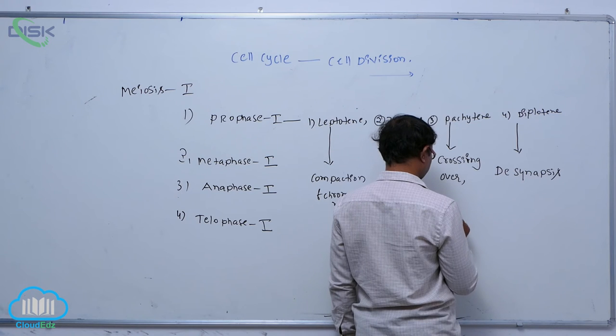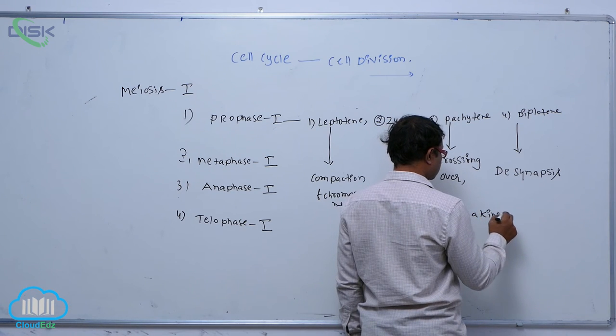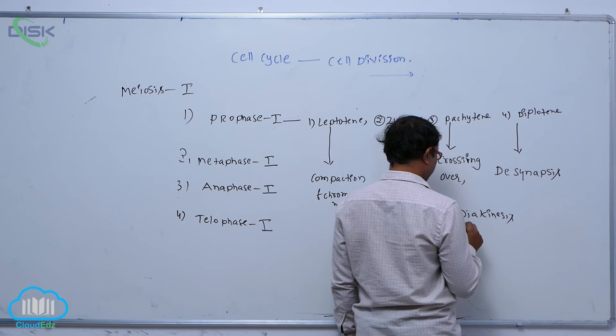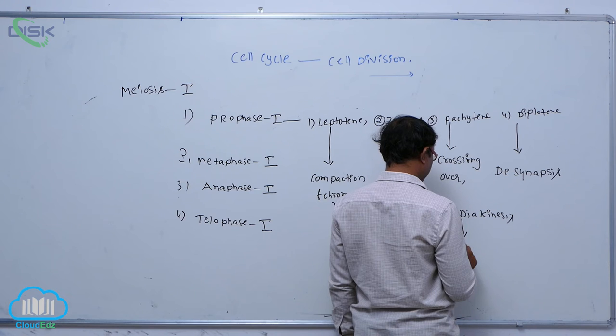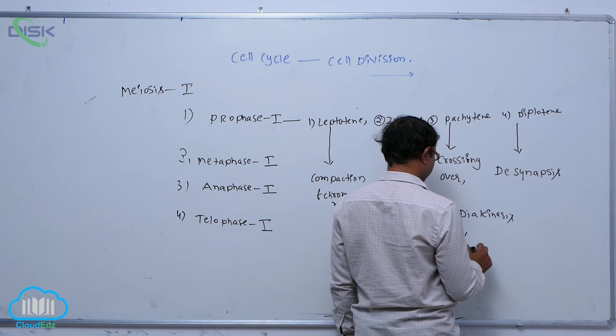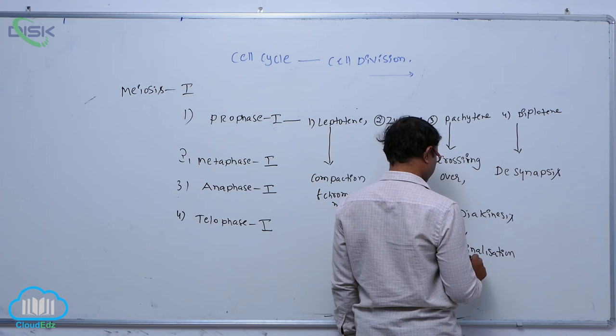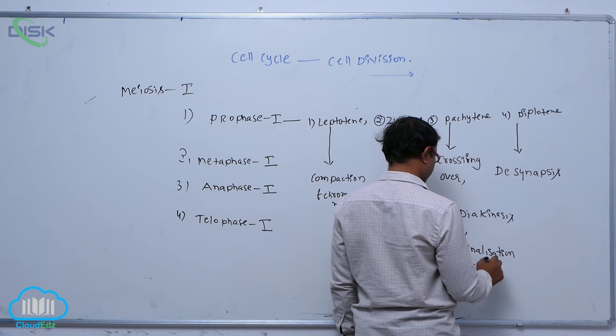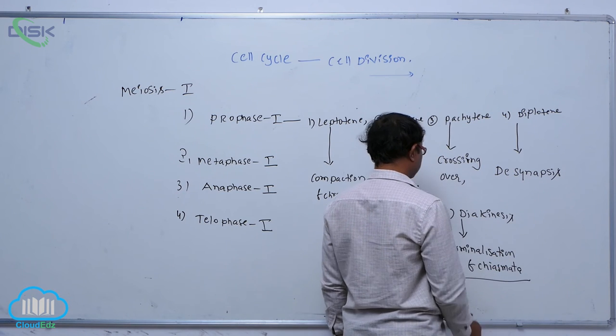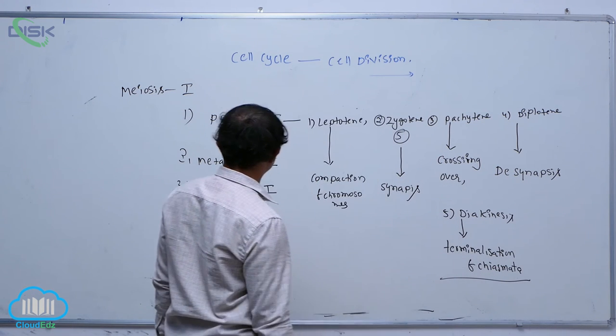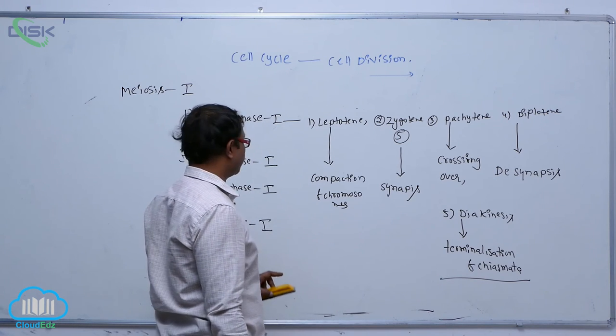After that, diakinesis. The key point is known as the terminalization of chiasmata. So these are the key points about prophase one. Then prophase one is completed.